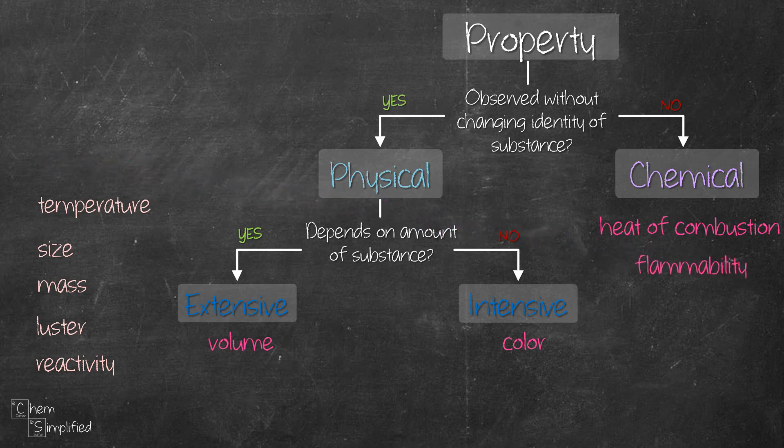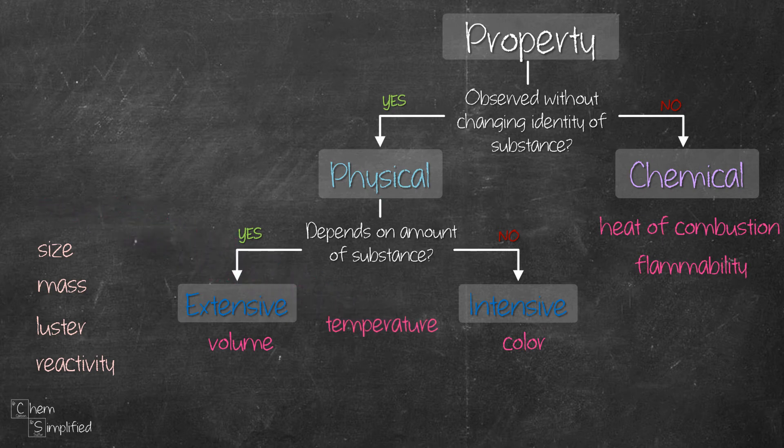Temperature of a substance in a reaction vessel can be measured without having the substance change its identity. That makes temperature a physical property. Now if the content of the reaction vessel is split into two separate containers, the temperature in both containers will be the same. That means temperature doesn't depend on the amount of substance, making it an intensive property.